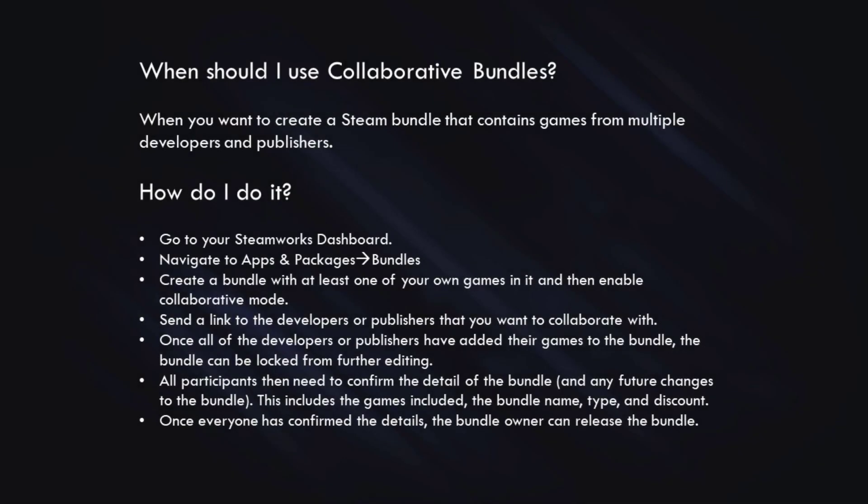That's all there is to creating a collaborative bundle in Steamworks. Let's quickly recap. When should I use collaborative bundles? When you want to create a Steam bundle that contains games from multiple developers and publishers. How do I do it? Go to your Steamworks dashboard, navigate to Apps and Packages, then scroll down to Bundles. Create a bundle with at least one of your own games in it, then enable collaborative mode. Send a link to the developers or publishers you want to collaborate with. Once all developers or publishers have added their games, the bundle can be locked from further editing. All participants then need to confirm the details — including the games included, the bundle name, type, and discount. Once everyone has confirmed, the bundle owner can release the bundle.